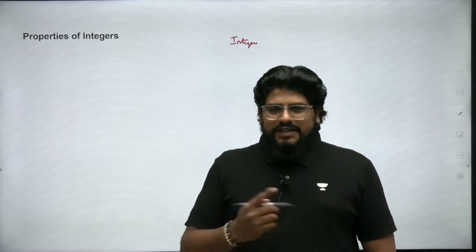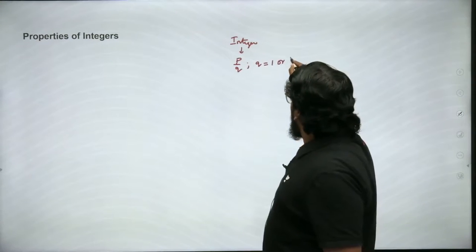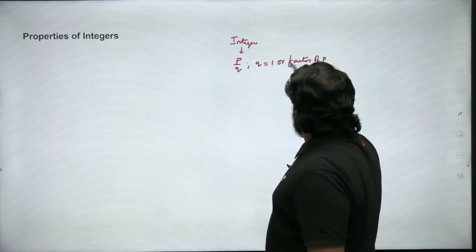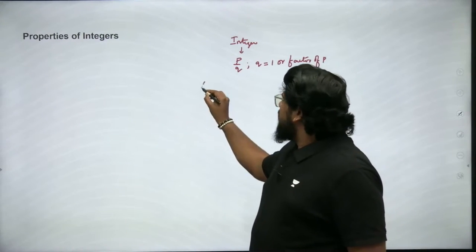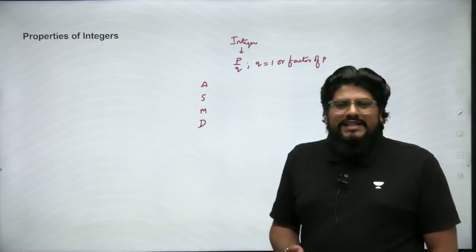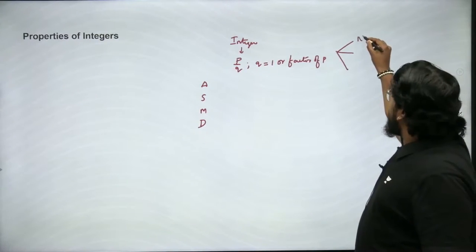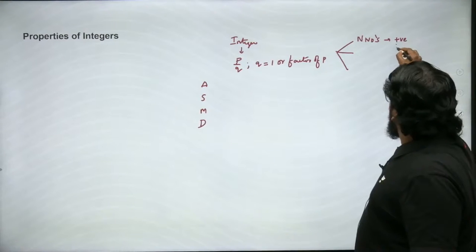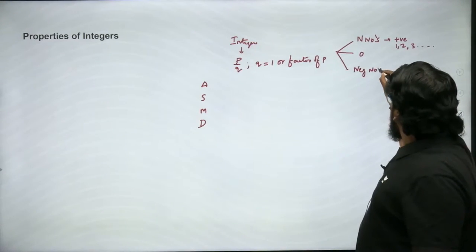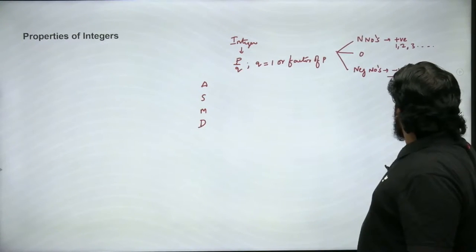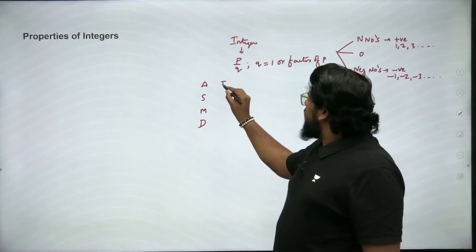If you have missed our first video, please visit that and come back. An integer is a number which can be expressed in the form p/q where q equals 1 or a factor of p. We have also seen that integers are classified into natural numbers — positive integers like 1, 2, 3 — zero, which is neither positive nor negative, and negative numbers like −1, −2, −3, and so on.